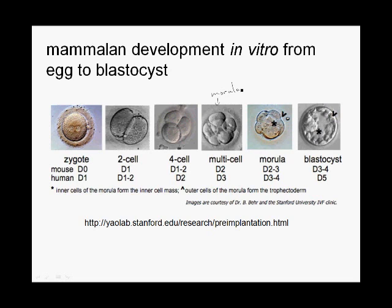The morula, at some point, undergoes compaction — you can see the difference in appearance before and after compaction. After compaction is when we see the first restriction of differentiation potential. The cells on the outside of a compacted morula are able to make only the extraembryonic cells — that is the placenta and the trophectoderm. The cells of the inner cells become, in the blastocyst stage embryo, the inner cell mass, which actually forms the body of the embryo. The fetus forms from the inner cell mass, and the outer layer of cells forms the trophectoderm and placenta.